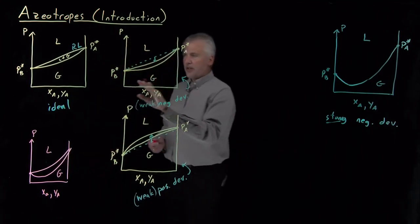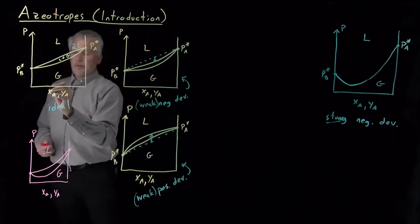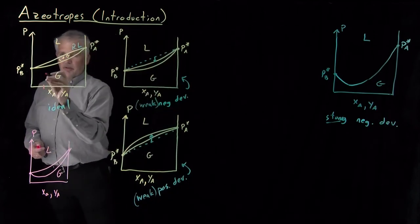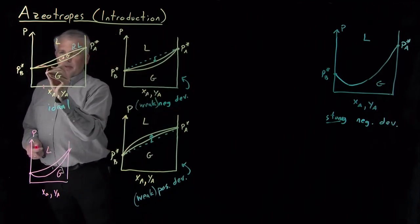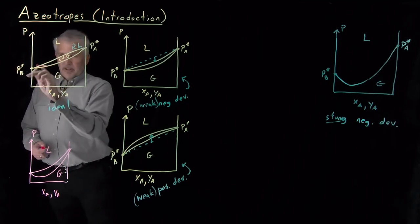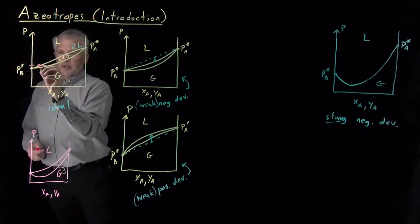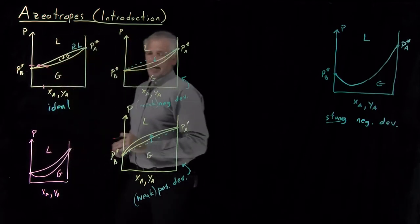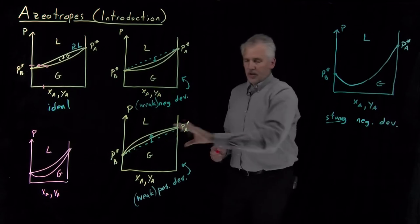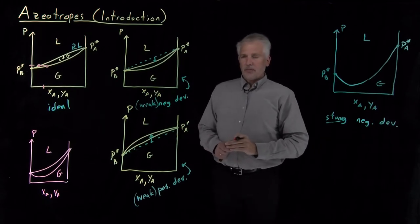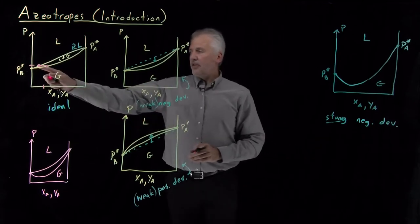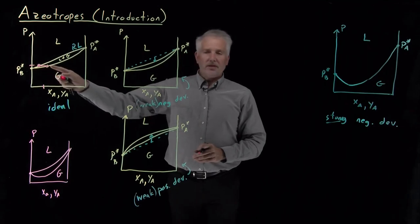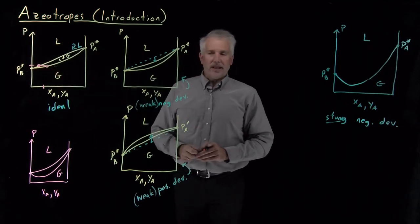The way we interpret this phase coexistence region, this liquid plus gas region, at a particular pressure we can read across and determine the composition of the liquid phase that's in equilibrium with the composition of the gas phase. Same thing is true on all these pressure composition diagrams. The tie lines tell us the composition of the two phases that are in equilibrium with each other at the opposite edges of this tie line.